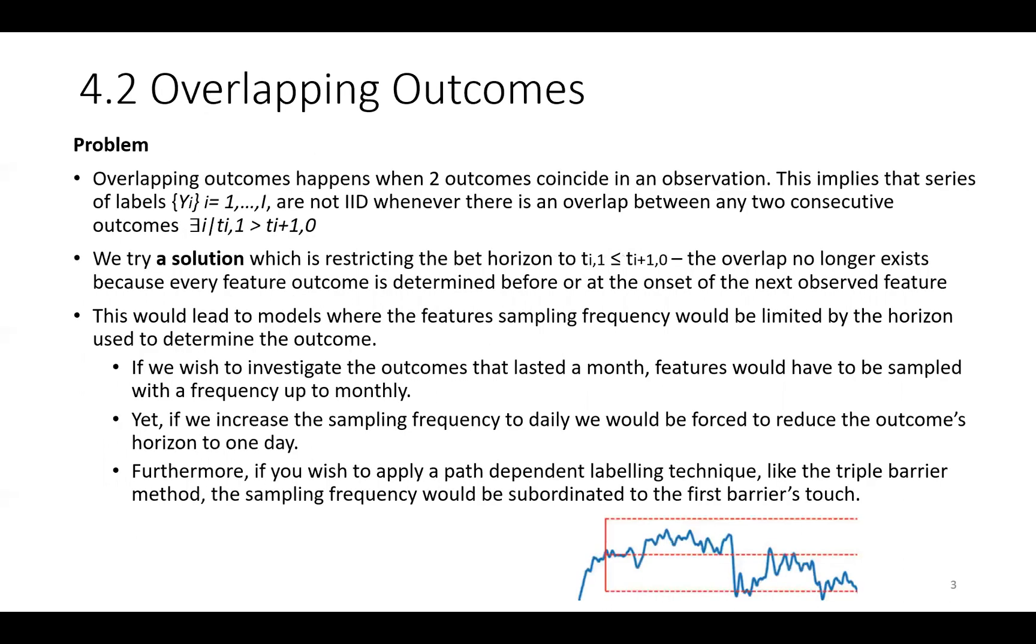We start with the overlapping outcomes in describing the problem. Overlapping outcomes happens when two outcomes coincide in an observation. This implies that series of labels are not IID whenever there is an overlap between any two consecutive outcomes.